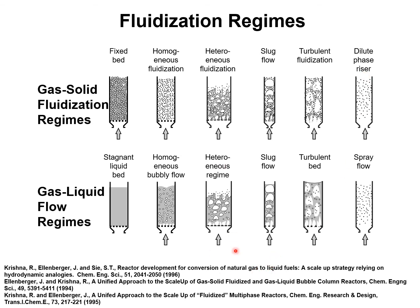The analogies in the various flow regimes are often of a quantitative nature. The analogous behavior can be exploited to develop a scale-up strategy that relies on cross-fertilization of data on bubble sizes, rise velocities, interface mass transfer, mixing, and scale effects. These are discussed in the papers listed here.